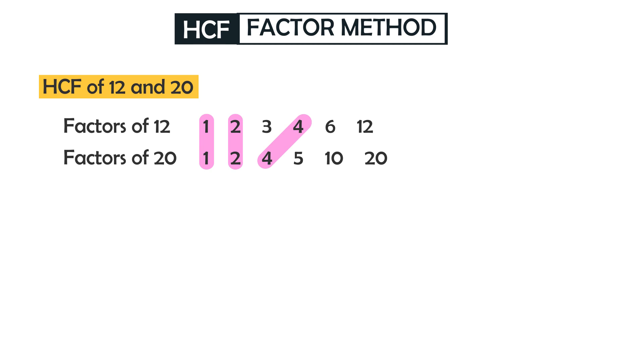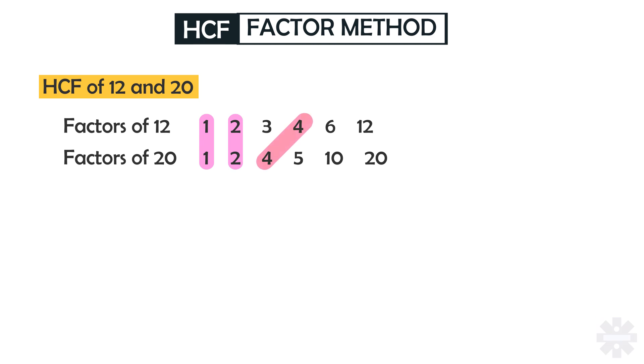Among them, 4 is the highest. So the highest common factor of 12 and 20 is 4. Easy, right?